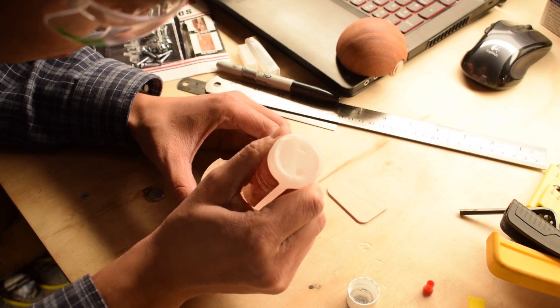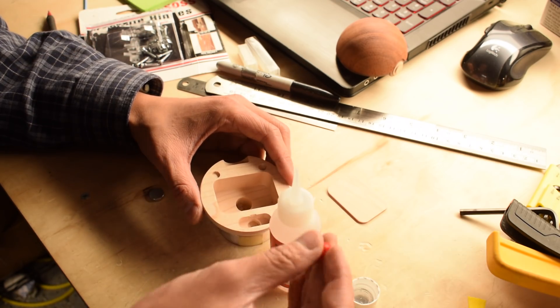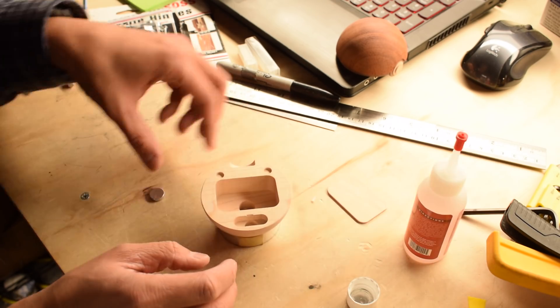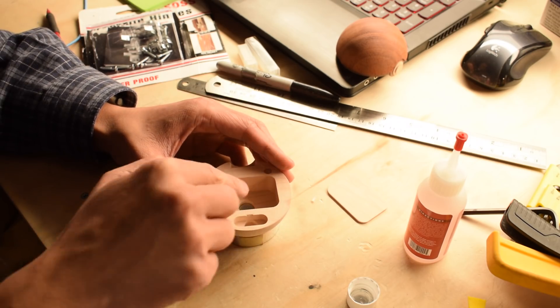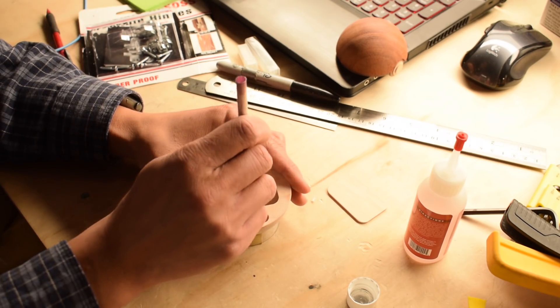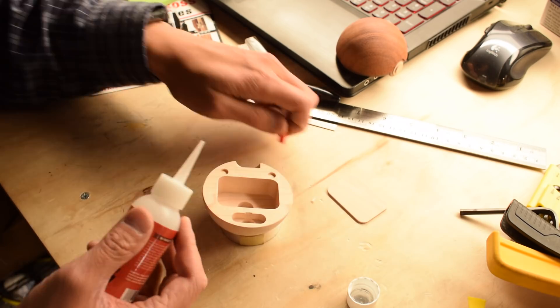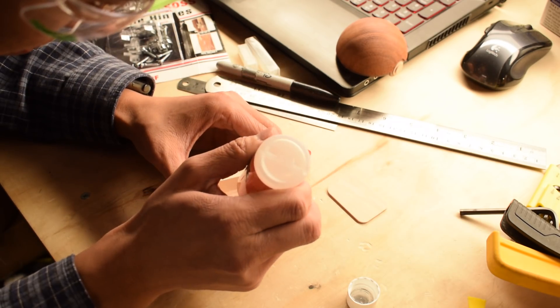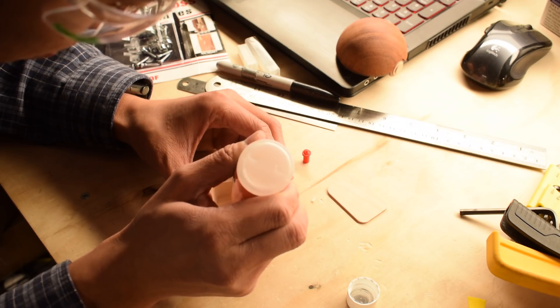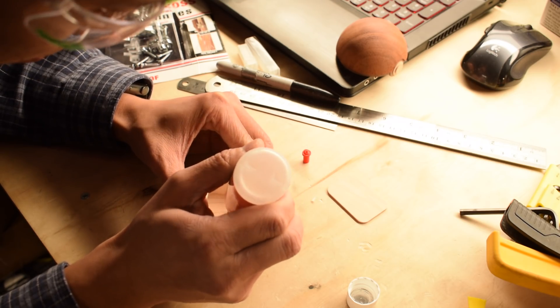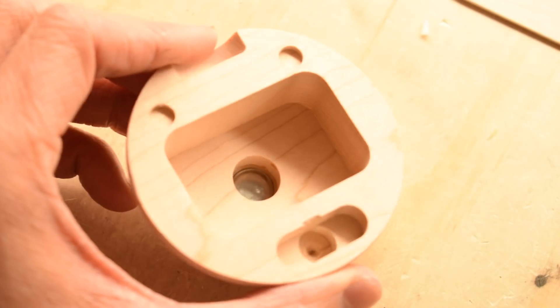And this is where Starbond thick CA glue came in super handy. Full disclosure, Starbond reached out to me and offered to hook me up with an assortment of CA glues. And in this particular application, the thick formulation was perfect. The fine tipped applicator delivered the adhesive exactly where I wanted it and in one shot I was able to build up enough thickness to entomb the magnet in its pocket and guarantee that it would never come loose.